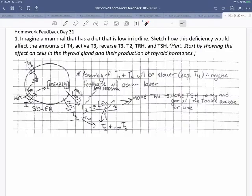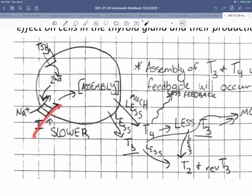So in the thyroid gland there's less iodine moving in, so that's slower. That means the creation of T3 and T4 is going to be lower, so there's going to be less T3, less T4.